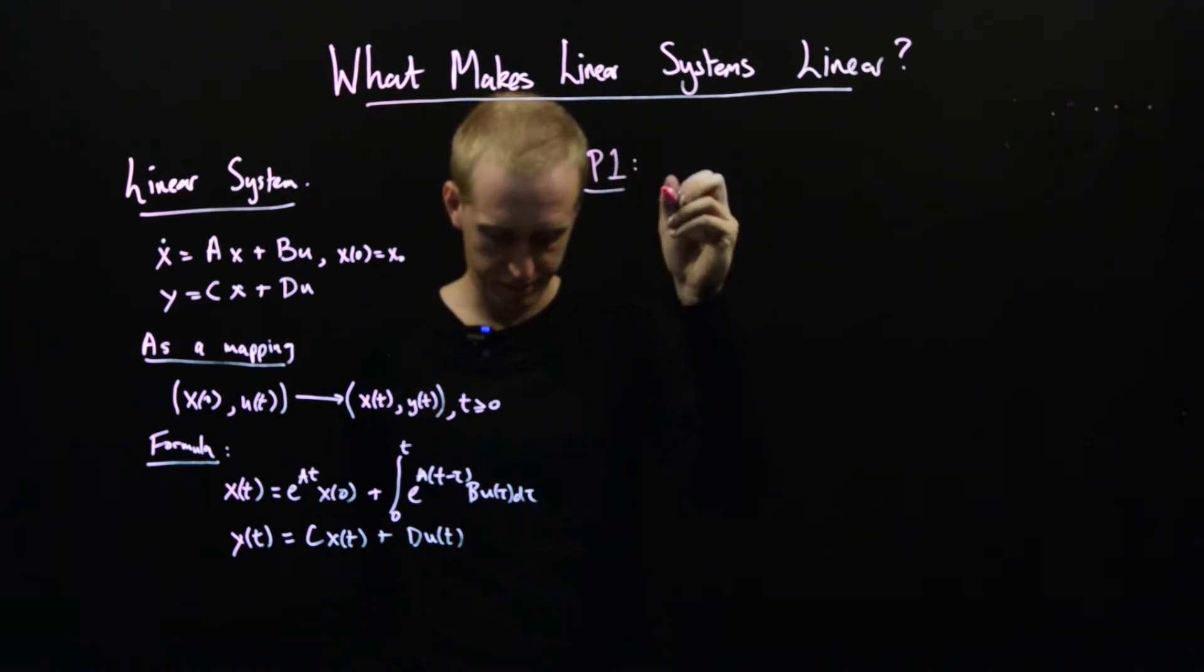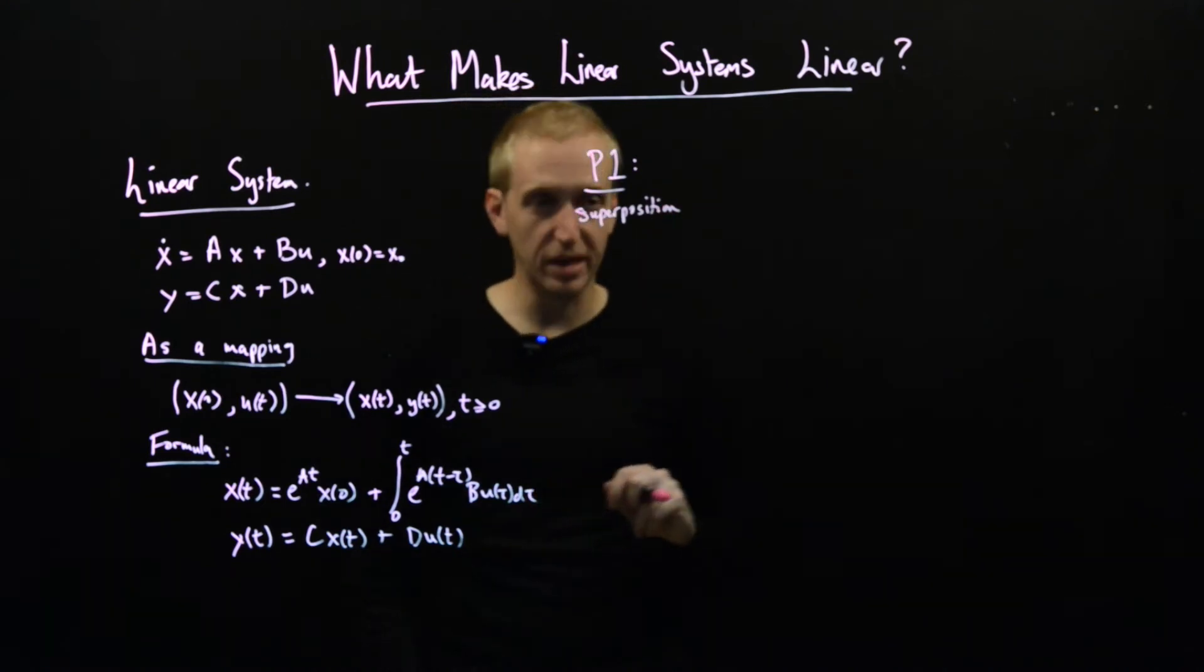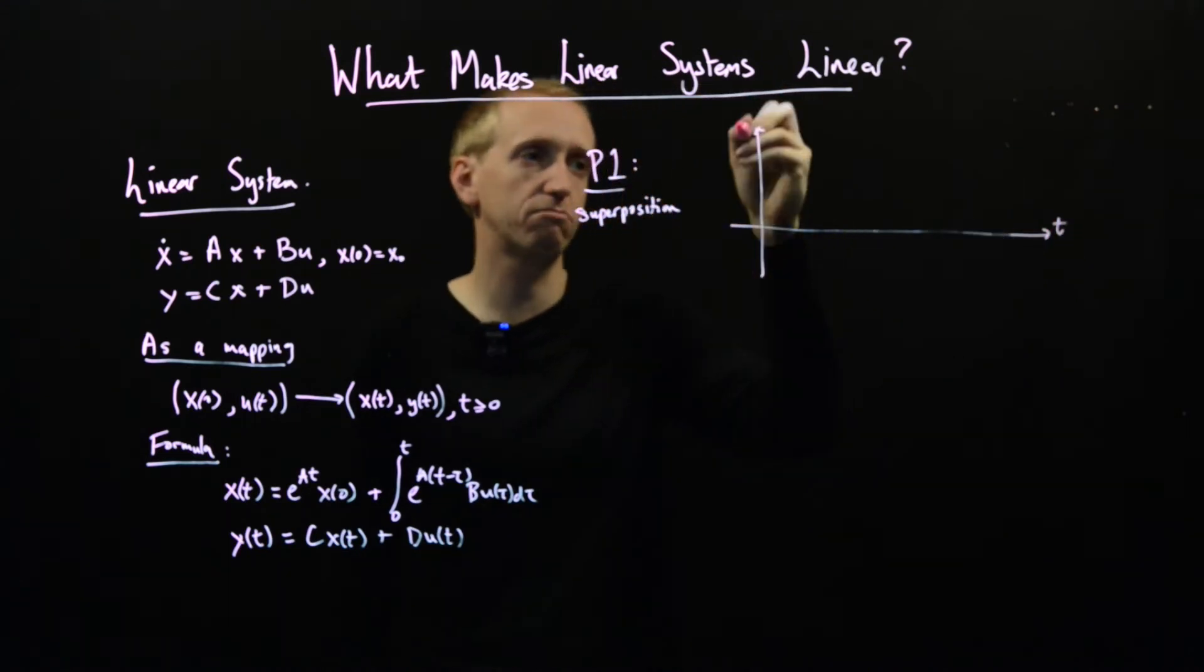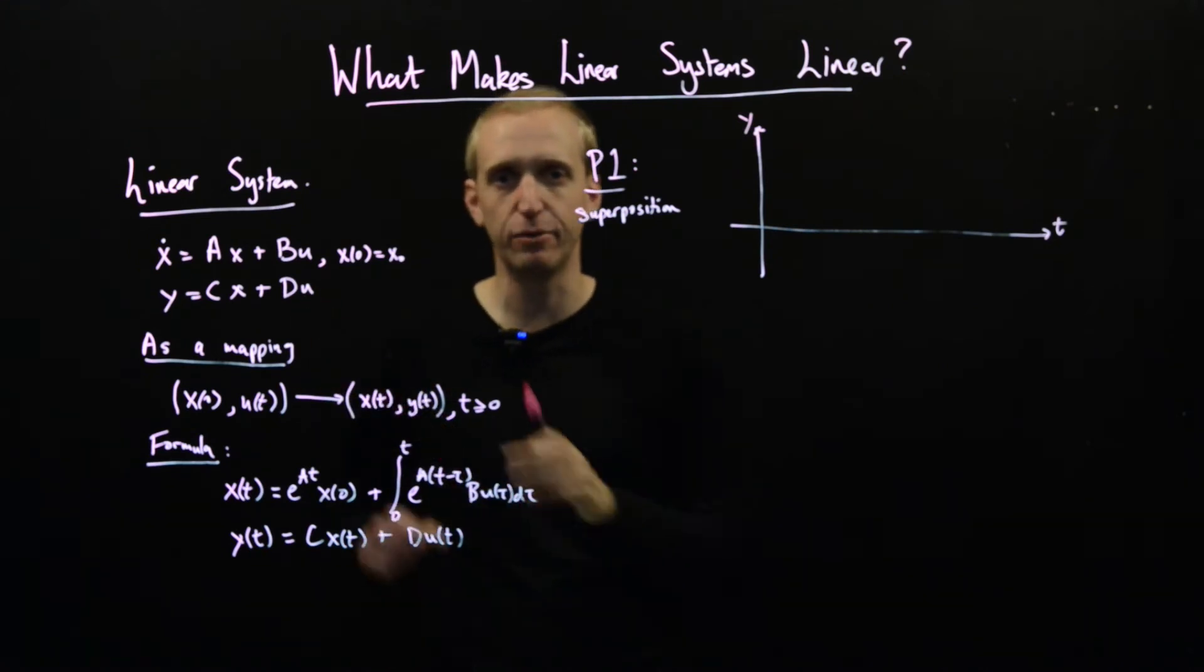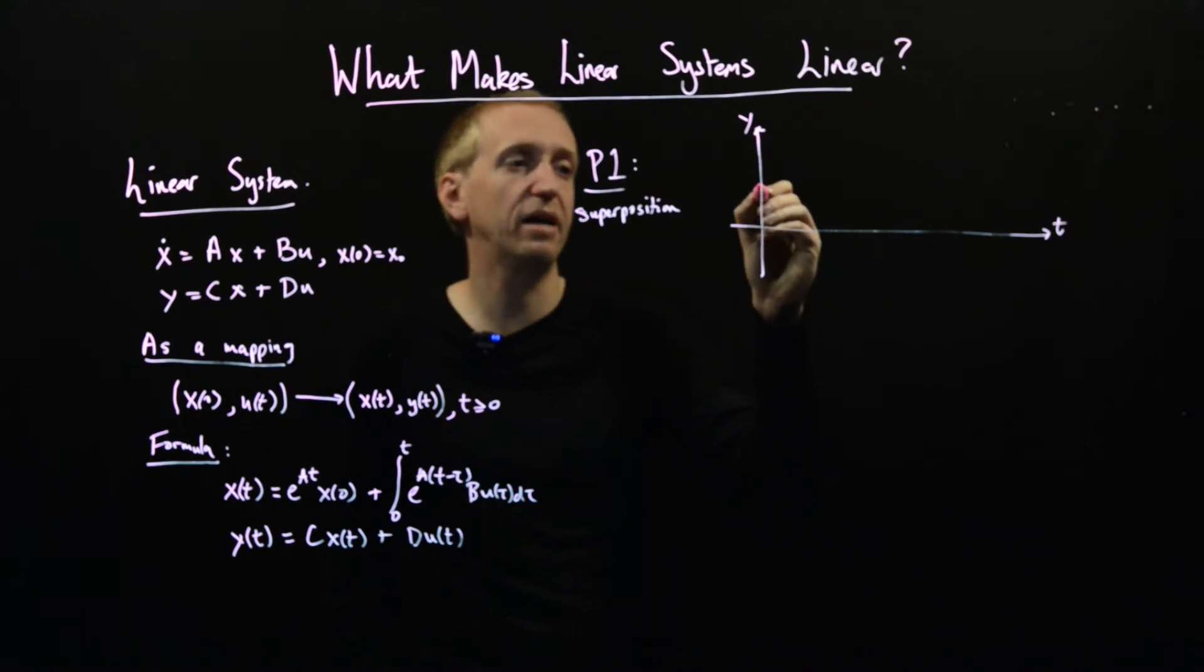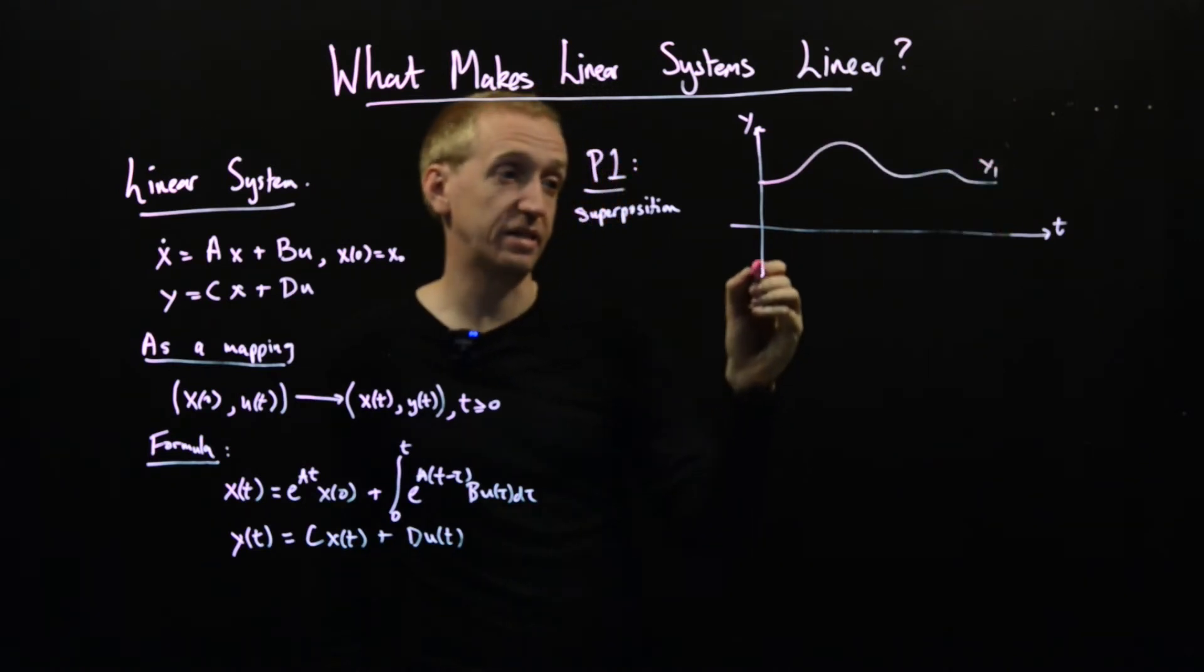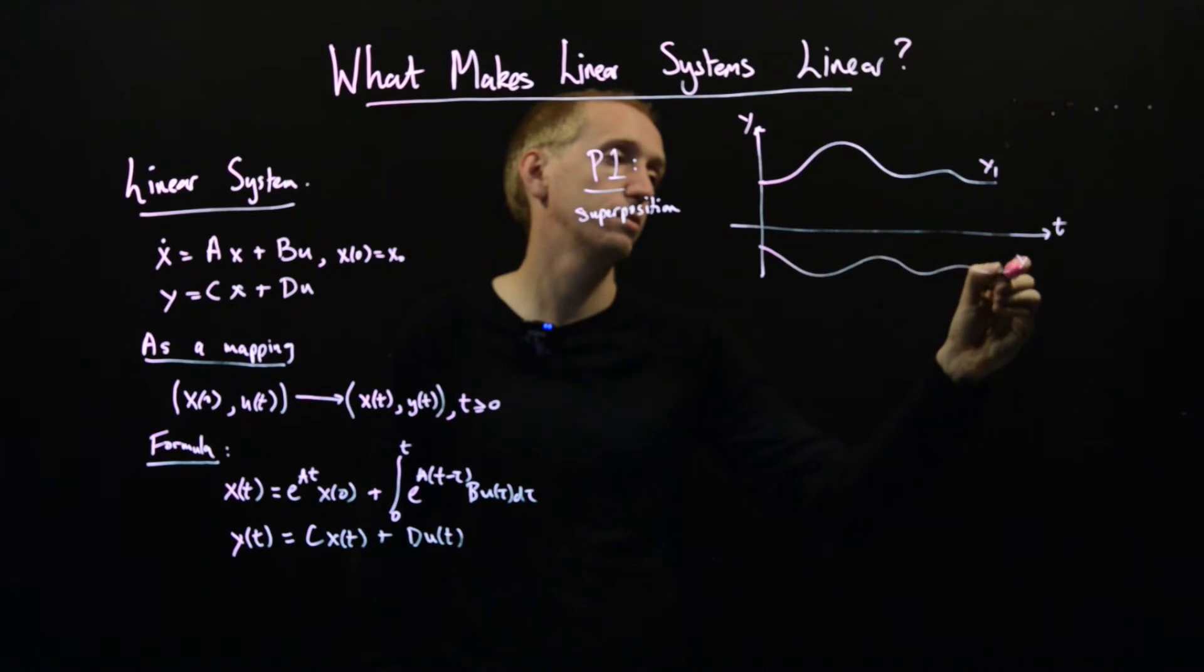So property one was superposition. Intuitively what does this mean? Let's draw some axes and here we have time, and let's say that we're plotting y on the y-axis. We're assuming y is scalar, though more generally y could be a vector. But let's just say that it's a scalar. So what does superposition say? Suppose we have one solution for a given initial condition and set of inputs and it looks like this. And let's say we have another one for another initial condition and another set of inputs. This is y2.